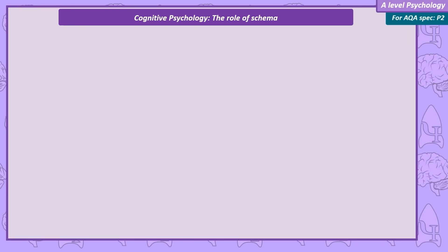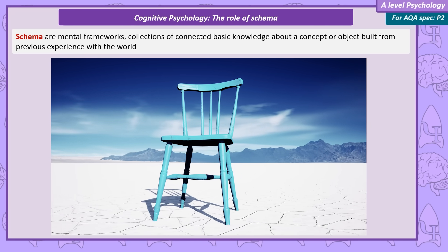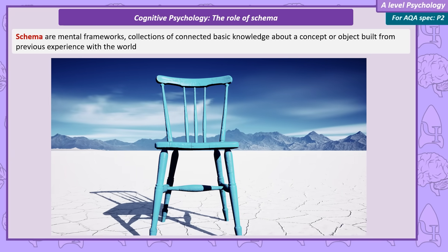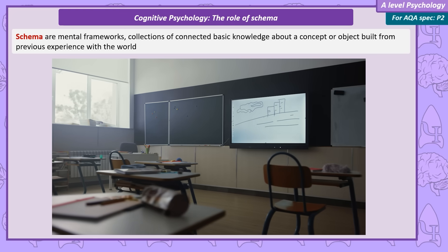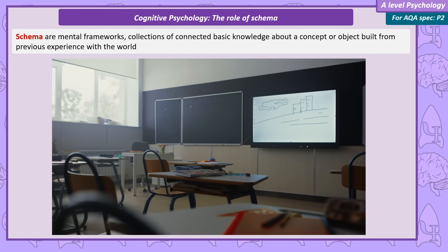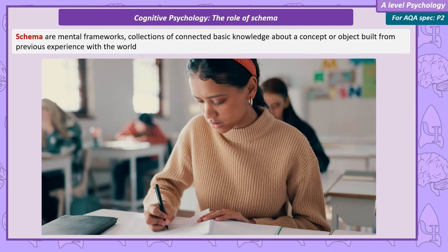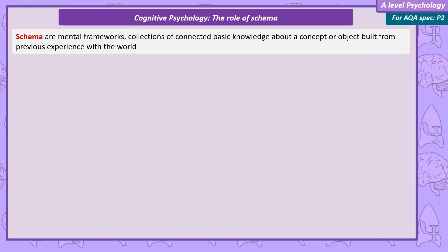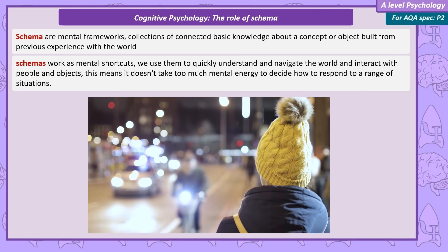The role of schema. A particular type of internal mental process we need to understand is a schema. Simply defined, a schema is a mental framework — a collection of basic knowledge about a concept or object built from our previous experience of the world. So if I say the word 'chair', chances are you have a schema for a chair: it has legs, a back, and if you sit on it, it supports your weight. If I say 'classroom', your schema would include a whiteboard, desks, and chairs. If you're a student in that classroom, you'll instantly have a set of schemas that help you understand your role and the behaviours expected of you. In this way, schemas work as mental shortcuts.